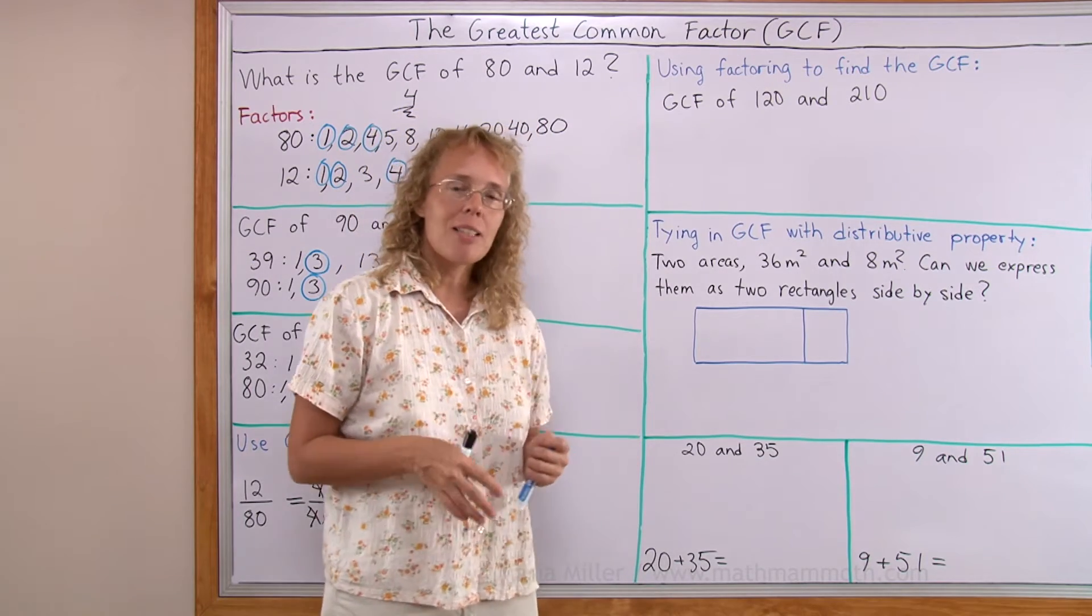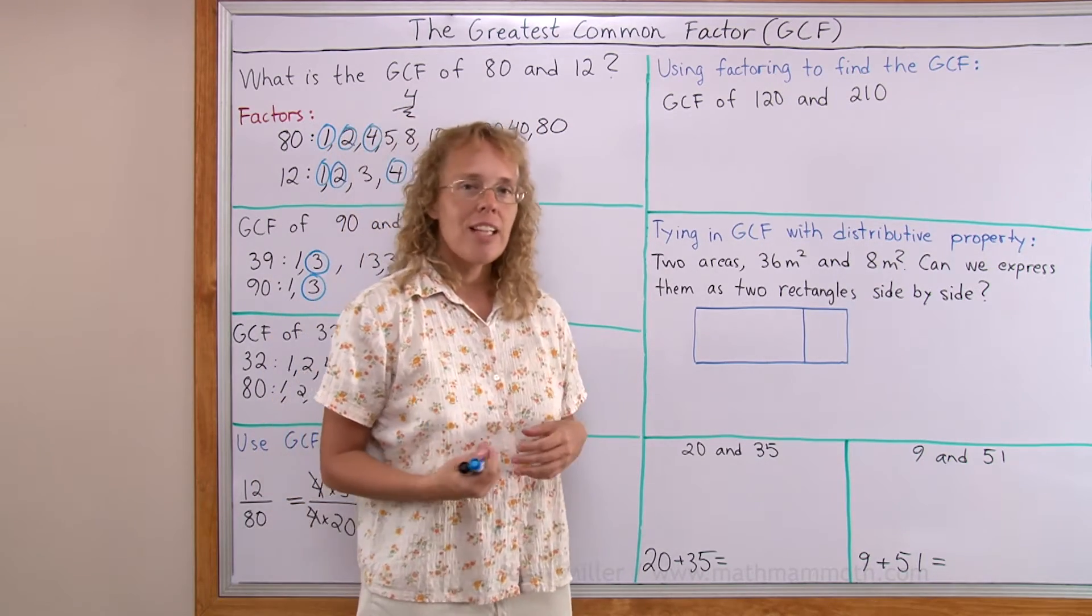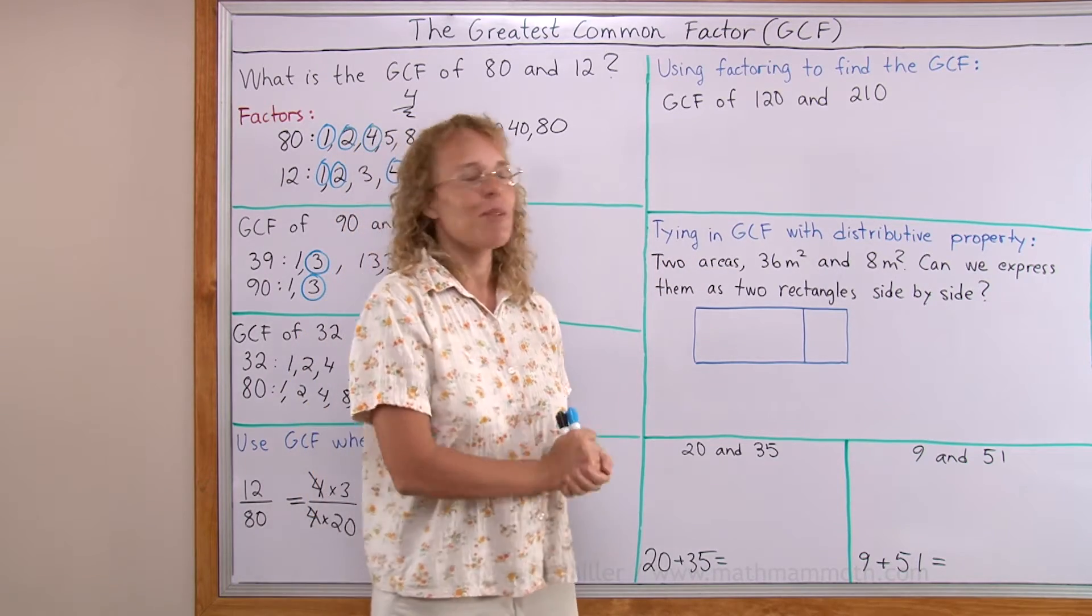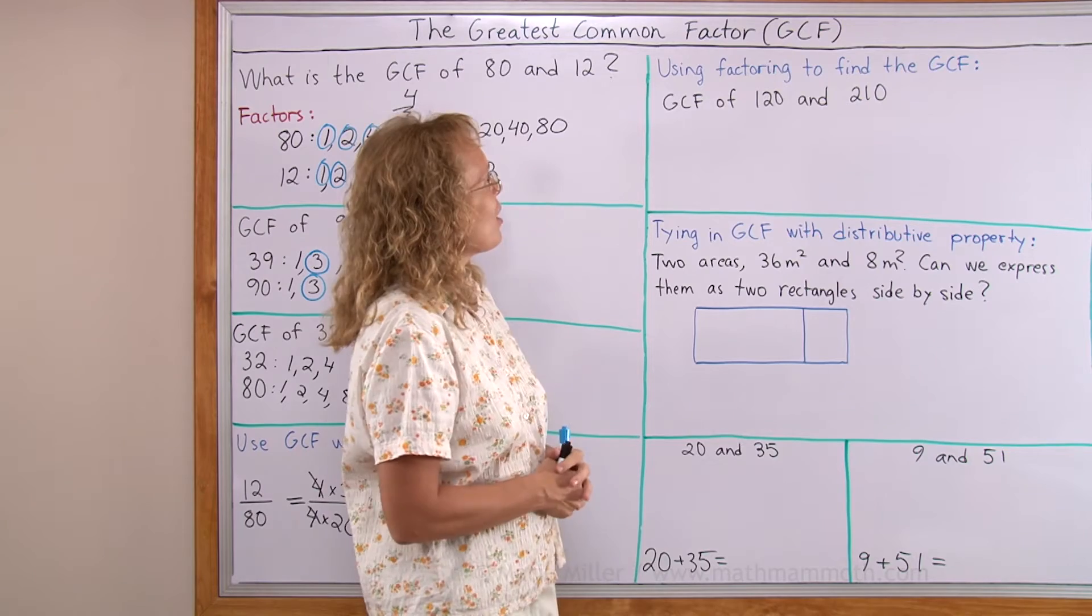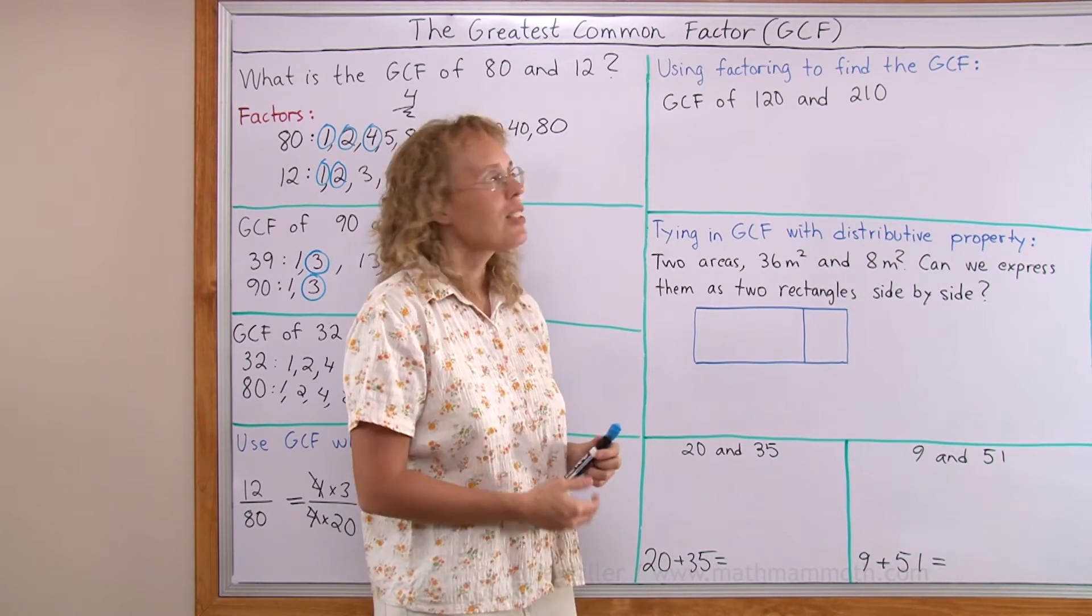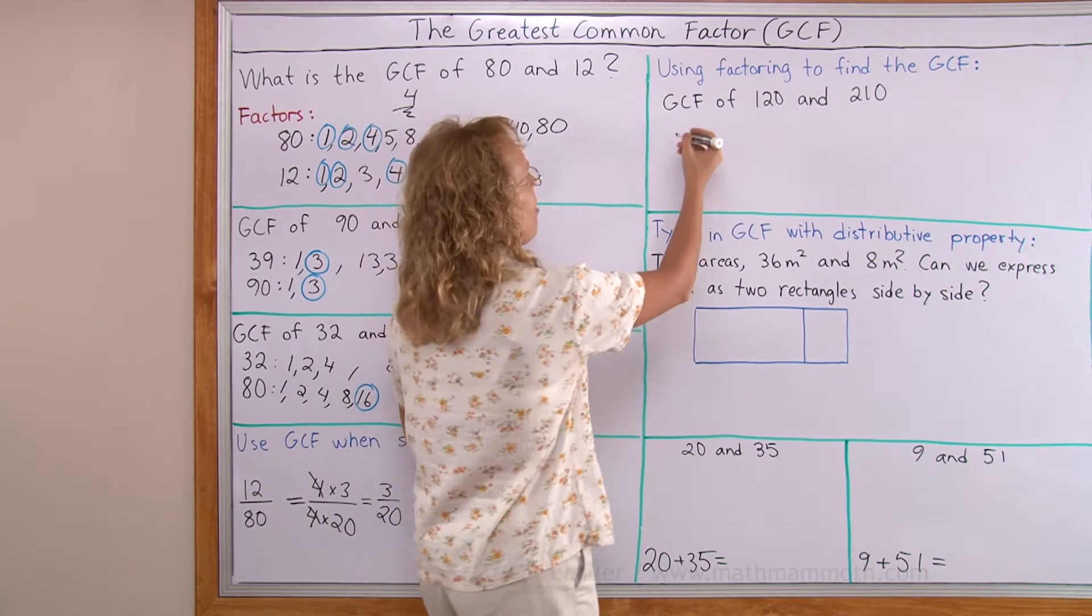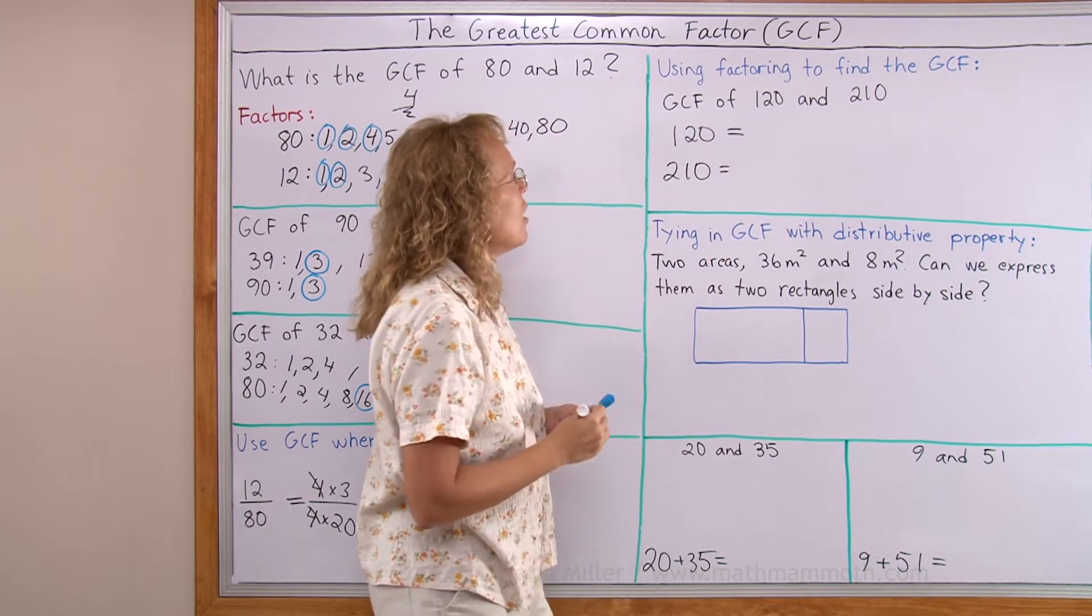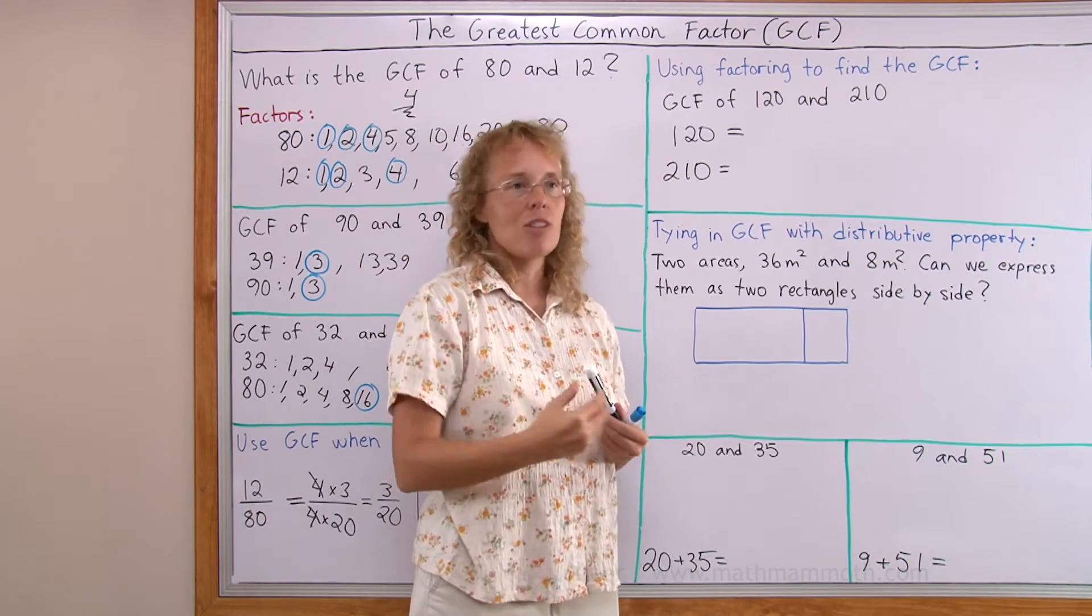I'm gonna show you just one example, because if you're in 6th grade, you may not actually need to know this. But I want to show you one example. If we need to find the greatest common factor of two numbers, 120 and 210 here, for example, I'm gonna factor both of them. I'm gonna find the prime factorization of both of them.